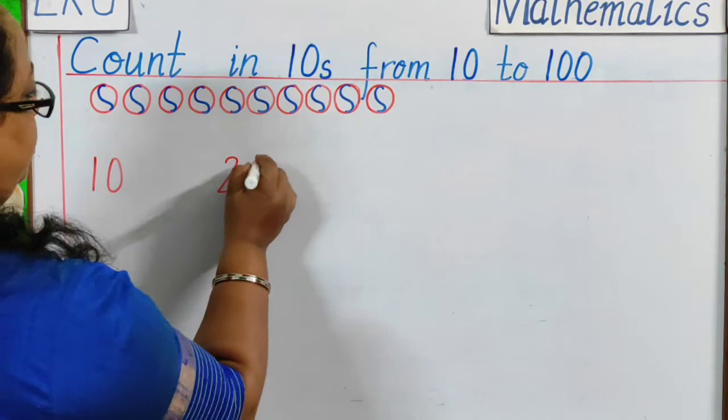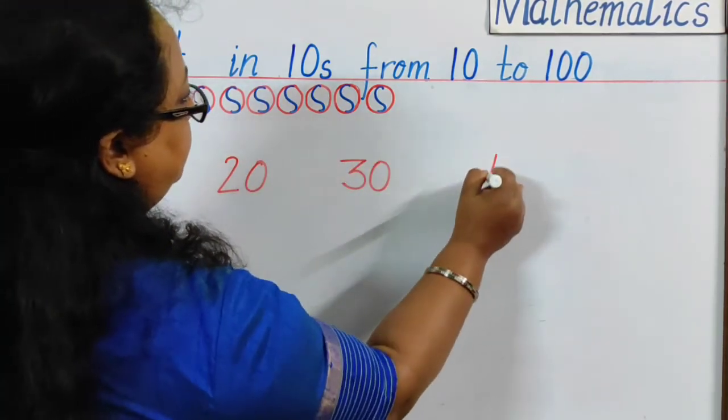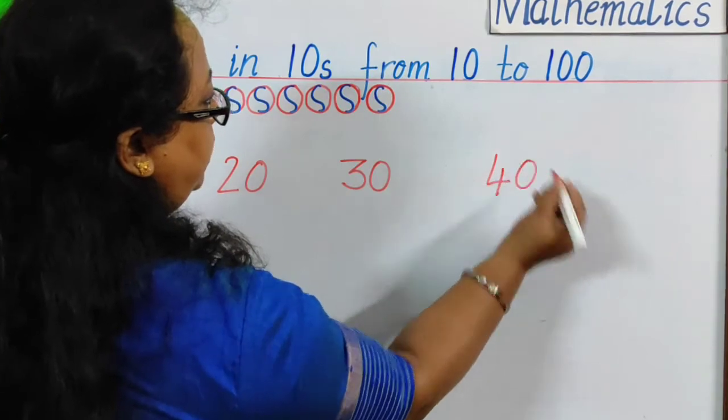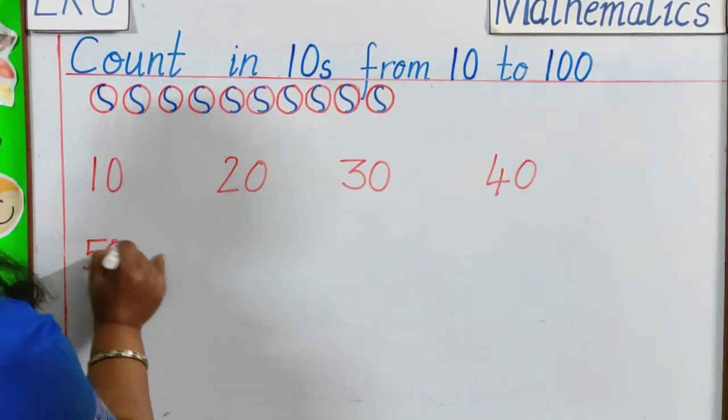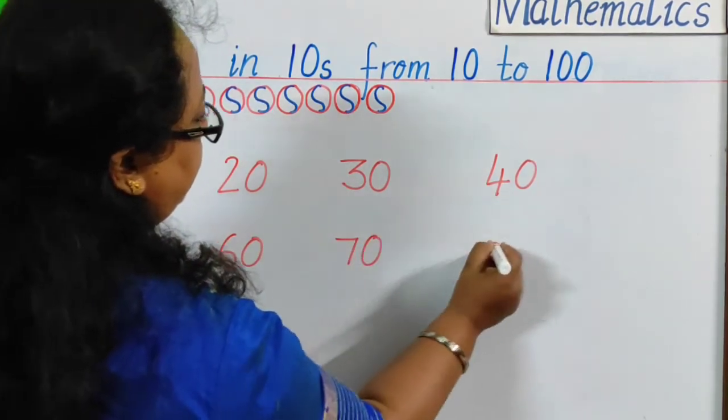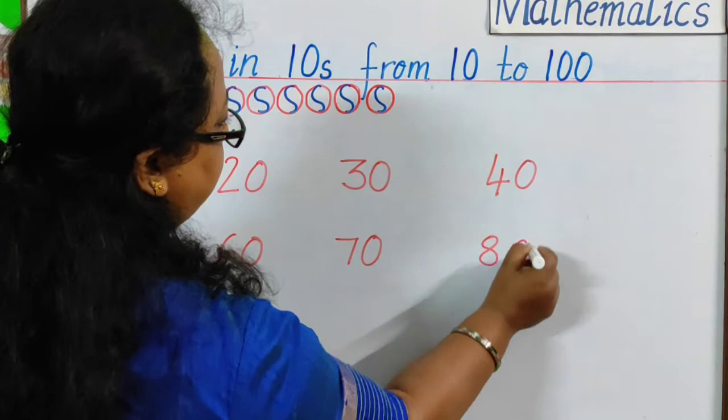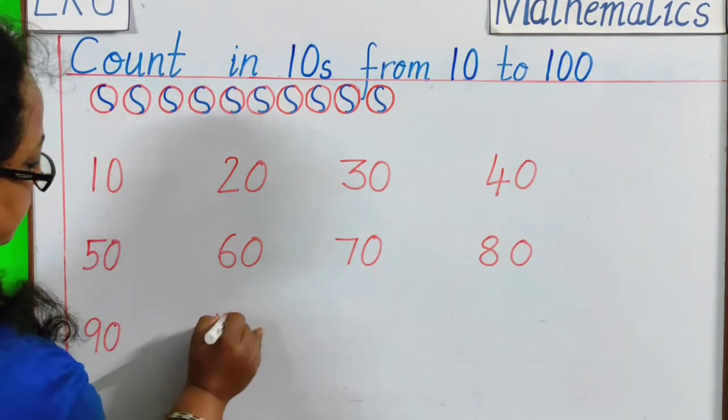After 20, 30. After 30, very good, 40. After 40, 50, 60, 70, 80, 90 and 100.